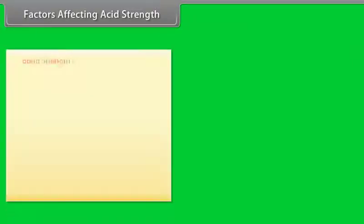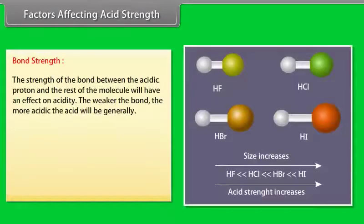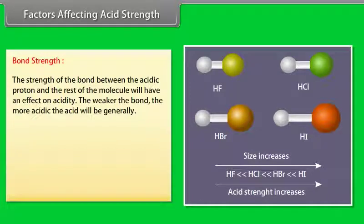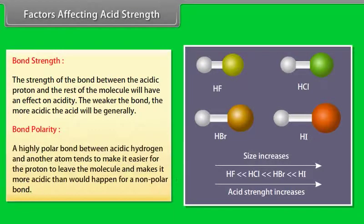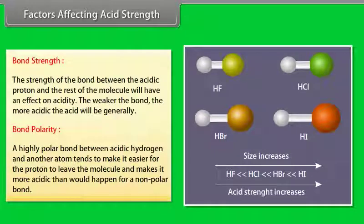Factors affecting acid strength — Bond strength: The strength of the bond between the acidic proton and the rest of the molecule affects acidity; the weaker the bond, the more acidic the acid. Bond polarity: A highly polar bond between acidic hydrogen and another atom makes it easier for the proton to leave the molecule, making it more acidic than a non-polar bond.